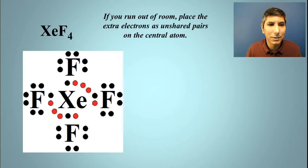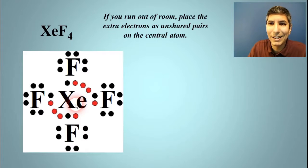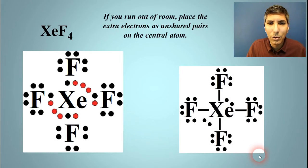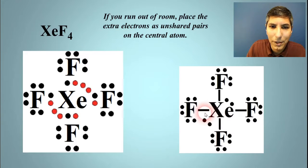In this case, those last four dots just end up being unshared pairs on the central atom. We have four shared pairs here, and we have two unshared pairs on that central atom. This is what your final version of your electron dot diagram should look like, where you have four single bonds and then the unshared pairs on that xenon, as well as everything on your fluorines.